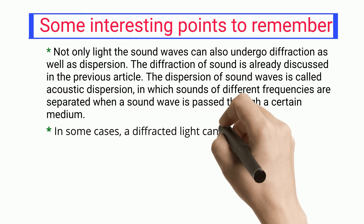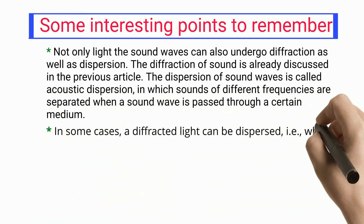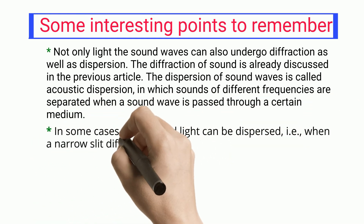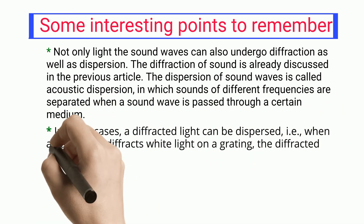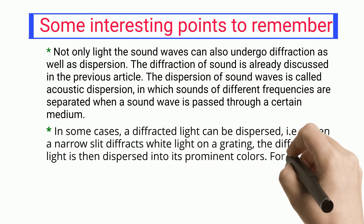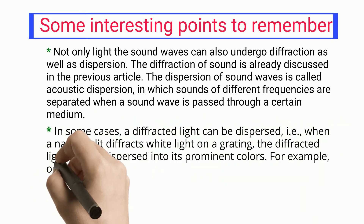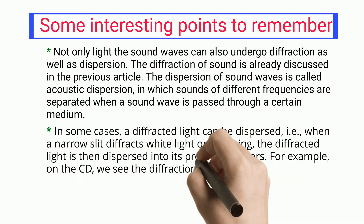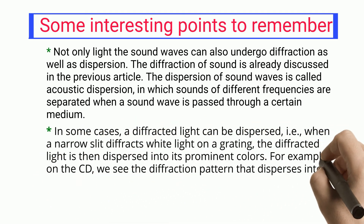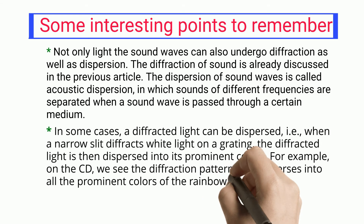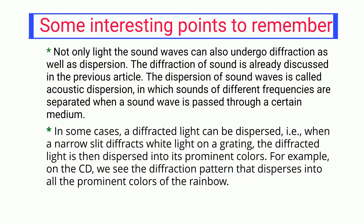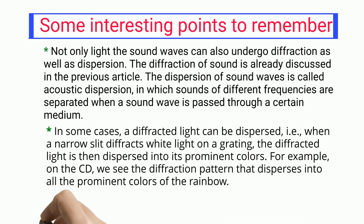In some cases, a diffracted light can be dispersed — when a narrow slit diffracts white light onto a grating, the diffracted light is then dispersed into its prominent colors. For example, on a CD we see the diffraction pattern that disperses into all the prominent colors of the rainbow.